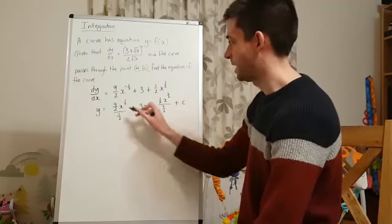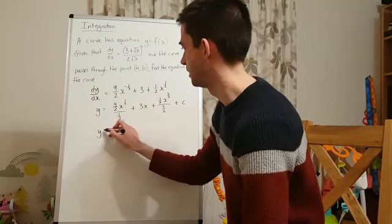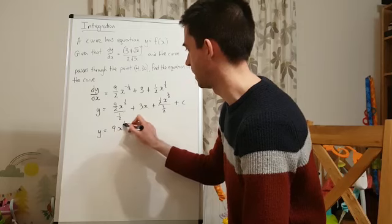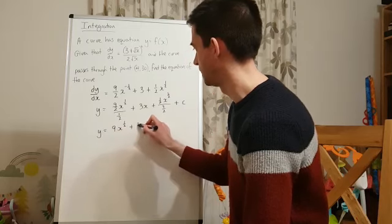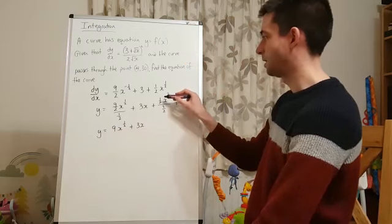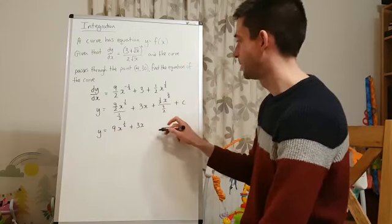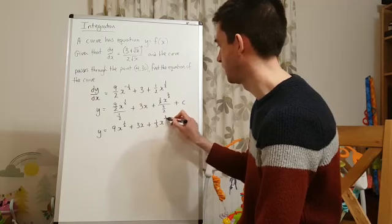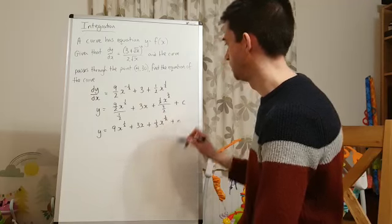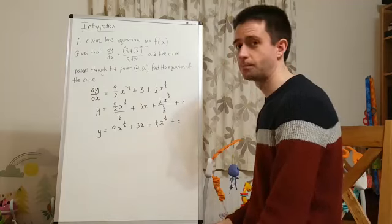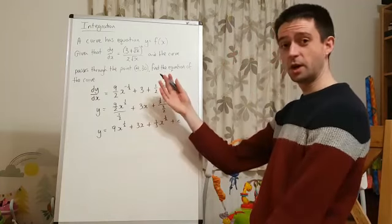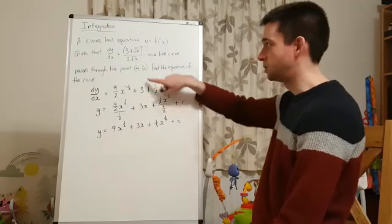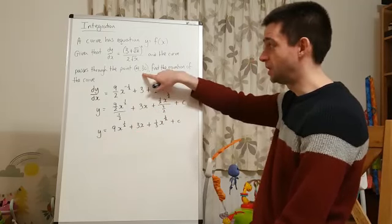So, let's just simplify that. 9 over 2 divided by a half is 9. So, what I've got now is 9x to the power of a half plus 3x. And then here, a half divided by 3 over 2 is going to be 1 third. So, plus 1 third x to the power of 3 over 2 plus c. Now, the question is, find the equation of the curve. So, I want y equals all of this, but I want that to be a number. And this is where I need to use what I've been given in the question.